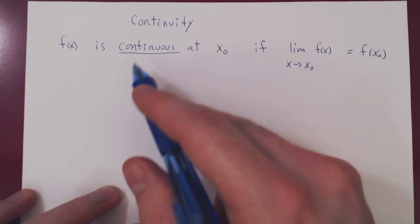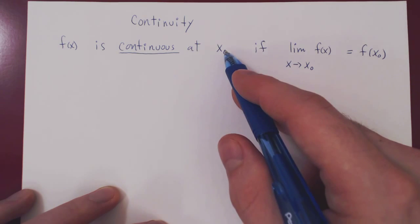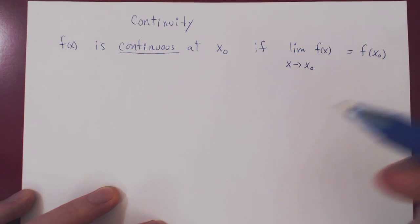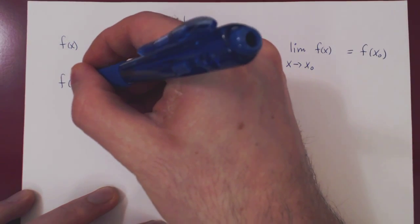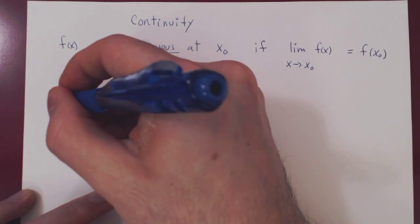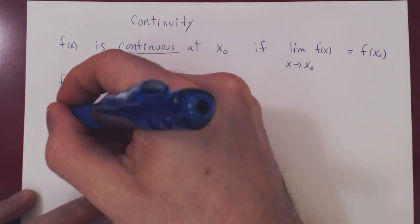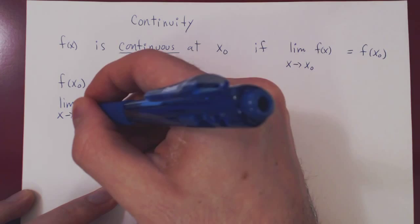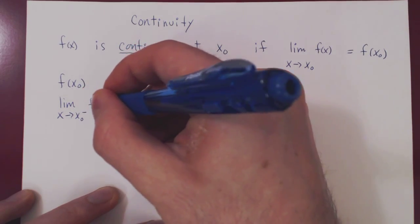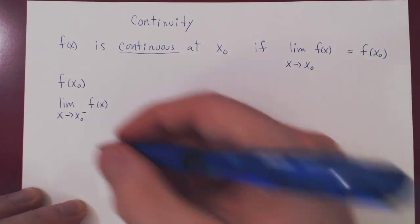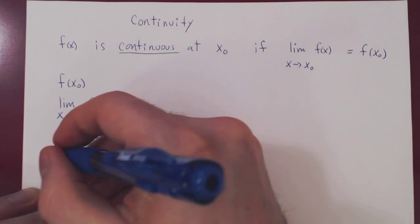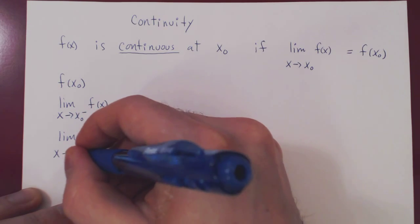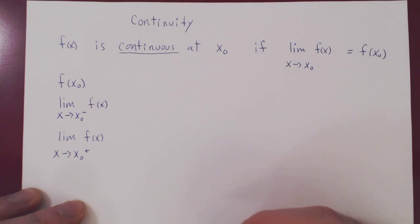For our function f to be continuous at a given value of x, say x0, the following three quantities must exist and be equal. So f of x0 must exist, the limit as x approaches x0, say from the left, must also exist, and the same must be true, of course, of the limit of f of x as x approaches x0 from the right.